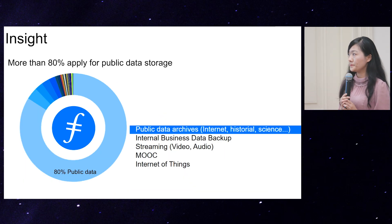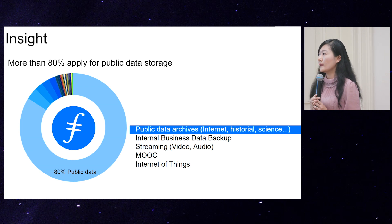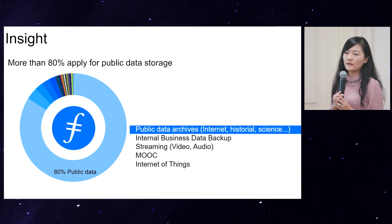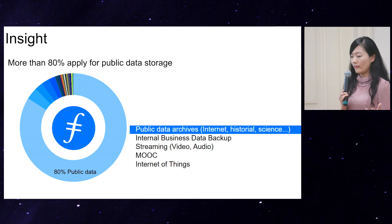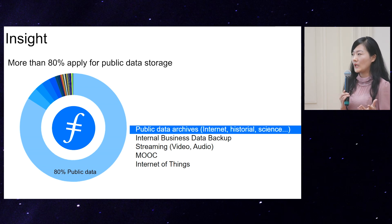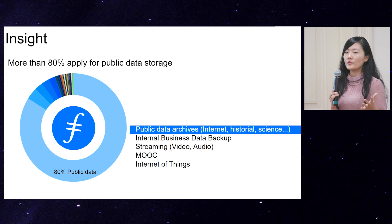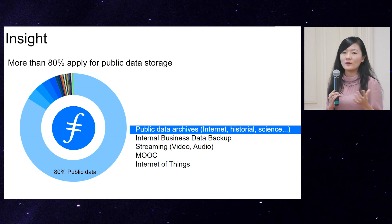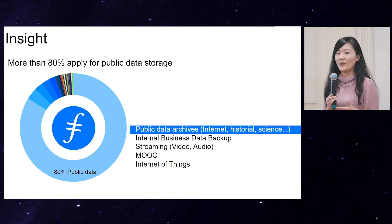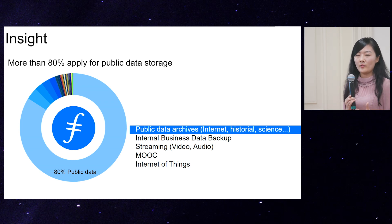More than 80% of applicants apply for public data storage. We intentionally asked users whether the data can be retrievable by anyone on the network, and more than 80% said yes. However, from the previous slide, half of people don't want their data to be retrieved. This indicates that sometimes when you ask customers what they want, they don't really know. That's why as a network we need to have a better value proposition to educate our users about what the suitable use cases are for them.